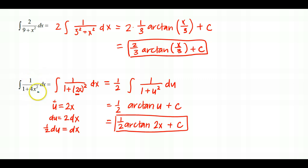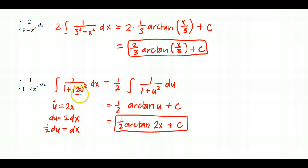This is a trickier substitution to spot. If we had tried letting u equal the entire denominator, we would get 8x in du and again have an extra x we can't handle. The formula requires exactly one variable squared — not an entire function squared. So we must use u-substitution and cannot apply the formula directly treating 2x as the variable.